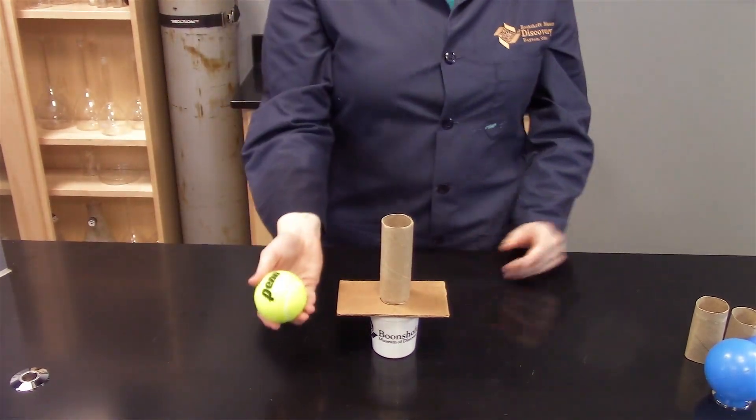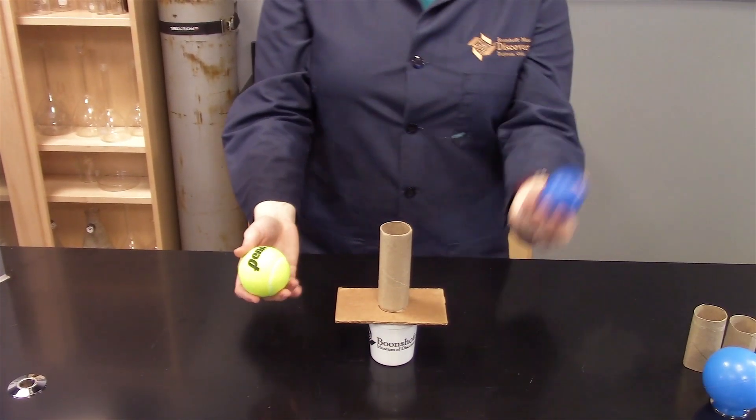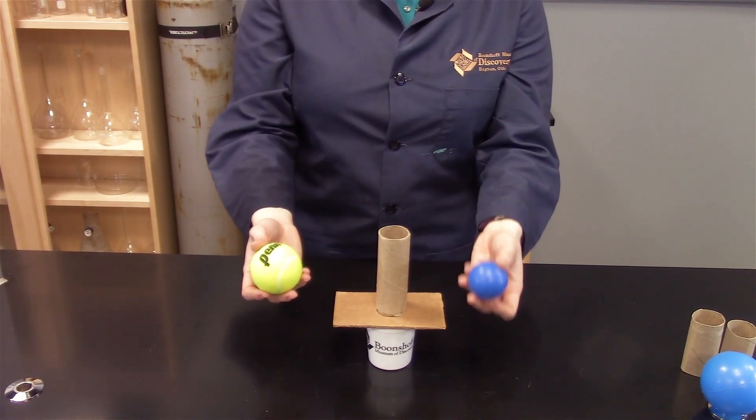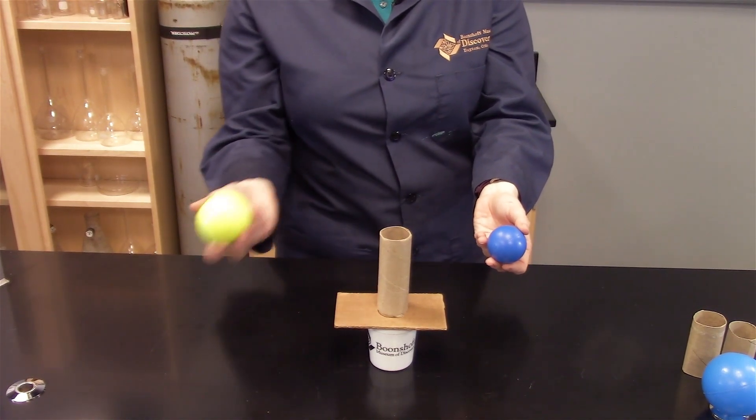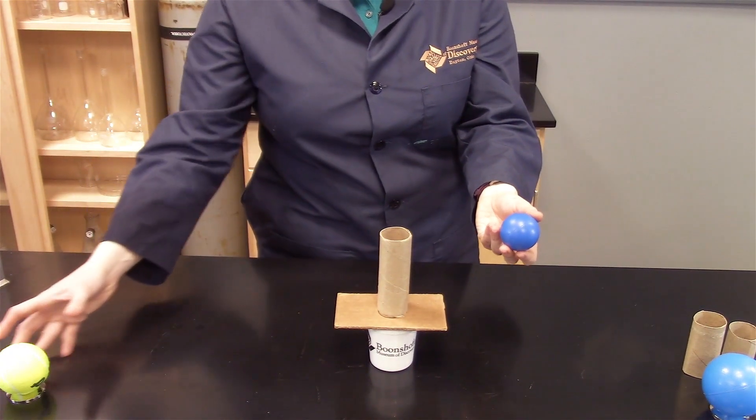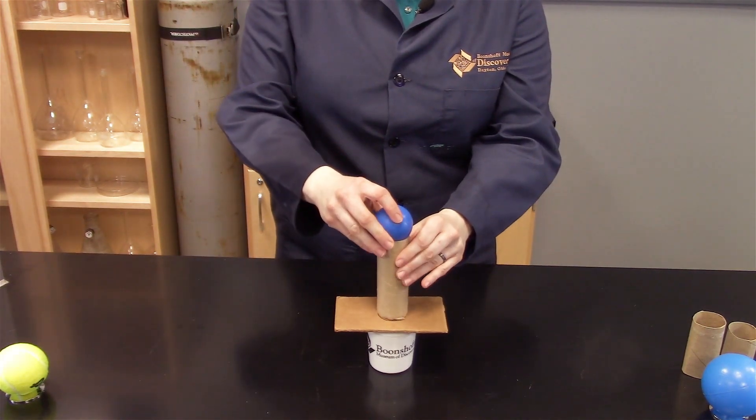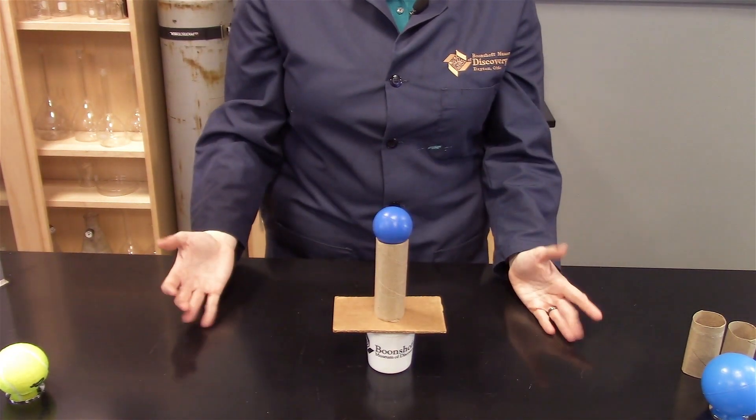But instead of my tennis ball, I'm going to use another ball here. So this one's just a little bit smaller and this one's a little bigger. So what's your hypothesis? What do you think? Is it going to be easier or harder for this ball to make it down into the cup?